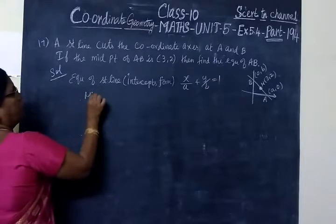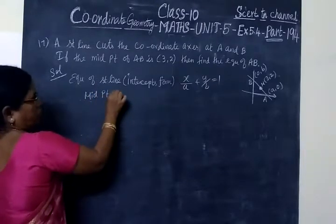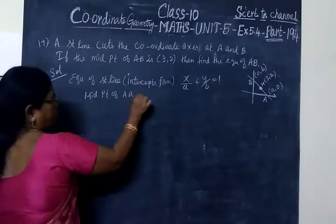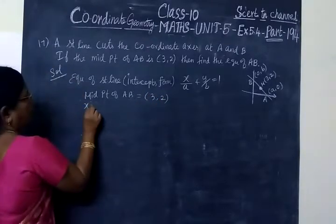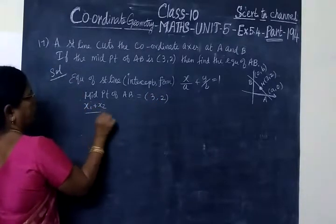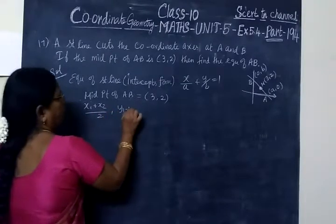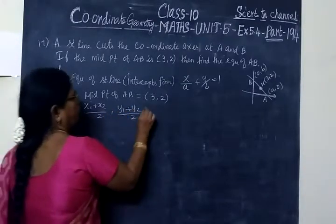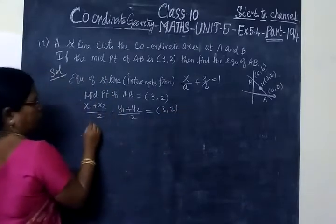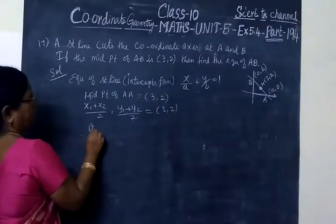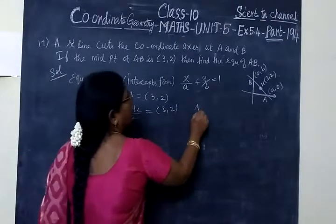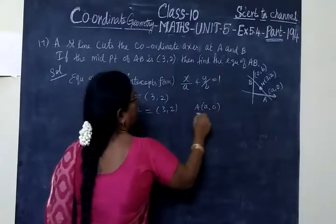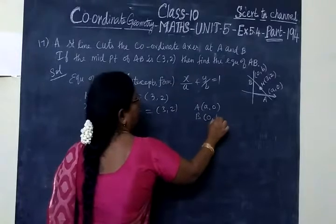Midpoint of AB equal to (3, 2). Midpoint formula: (X1 plus X2)/2, (Y1 plus Y2)/2 equal to (3, 2). X1 equals A, X2 is 0. A is (A, 0), B is (0, B).